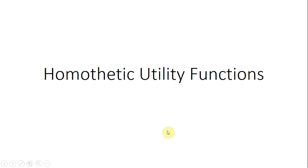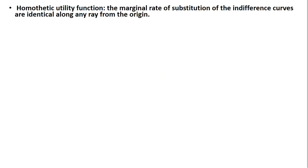In this video, we're going to look at the concept of homothetic utility functions. A homothetic utility function has a property that the marginal rate of substitution of the indifference curves are identical along any ray or straight line from the origin.